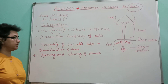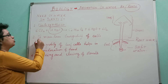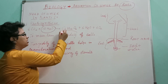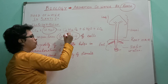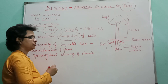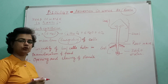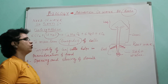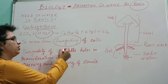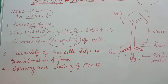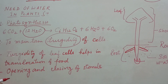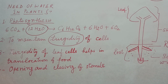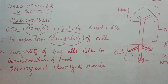The next need is to maintain turgidity. Turgidity is a new word for you all. Turgidity means when a cell is at its maximum volume — when a cell is completely filled with water, that is known as a turgid cell.